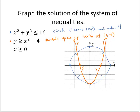And now, finally, I have x is greater than or equal to 0. Well, x equals 0 is the y-axis. And where is x greater than 0? That would be to the right of that. So I need inside the circle above the parabola and to the right of the y-axis. And so the region that would be shaded is this region.